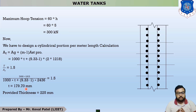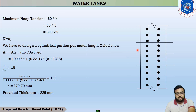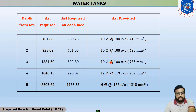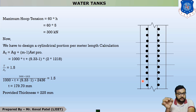This is the end of the design of the cylindrical portion. The reinforcement detailing is as follows: at 1 meter depth — 10 mm dia at 190 mm c/c; at 2 meter depth — 10 mm dia at 165 mm c/c; at 3 meter depth — 10 mm dia at 100 mm c/c; at 4 meter depth — 12 mm dia at 115 mm c/c; at 5 meter depth — 16 mm dia at 165 mm c/c. This is the design and detailing of reinforcement. Thank you.